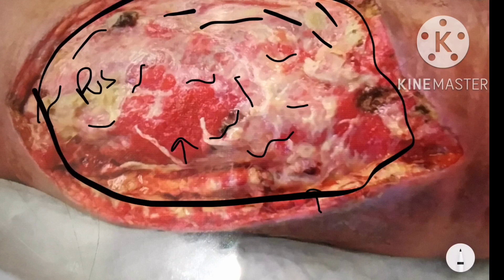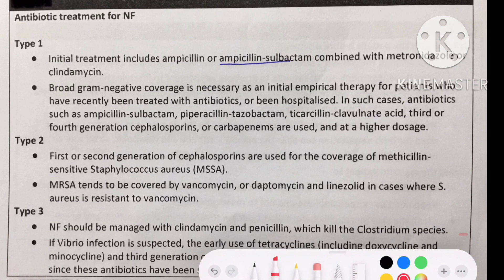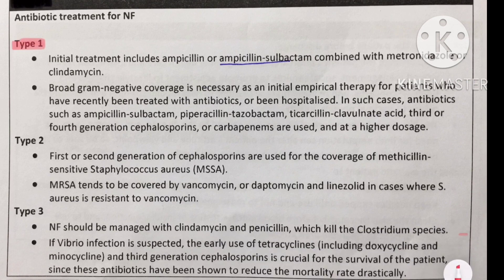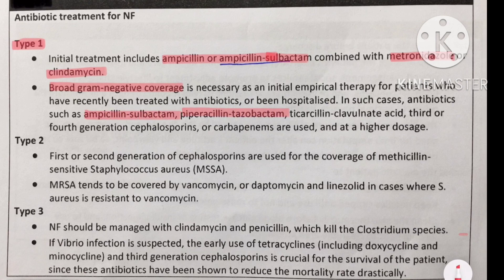For type 1 necrotizing fasciitis, the initial treatment is ampicillin or ampicillin-sulbactam combined with metronidazole or clindamycin. Broad gram-negative coverage is necessary as empirical therapy, especially for patients recently treated with antibiotics or hospitalized. In such cases, antibiotics such as ampicillin-sulbactam, piperacillin-tazobactam, ticarcillin-clavulanic acid, third or fourth generation cephalosporins, or carbapenems are used at higher doses.